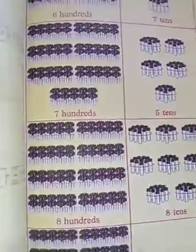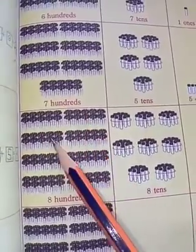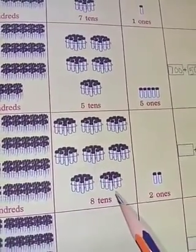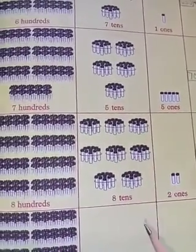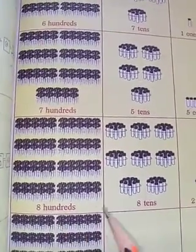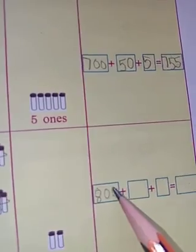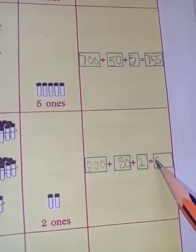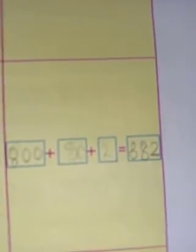Next one. How many hundreds are given? One, two, three, four, five, six, seven, eight — eight hundreds. How many tens are having children? One, two, three, four, five, six, seven, eight — eight tens means eighty. Eight hundred and eighty, plus two ones, two. Eight hundred and eighty-two.